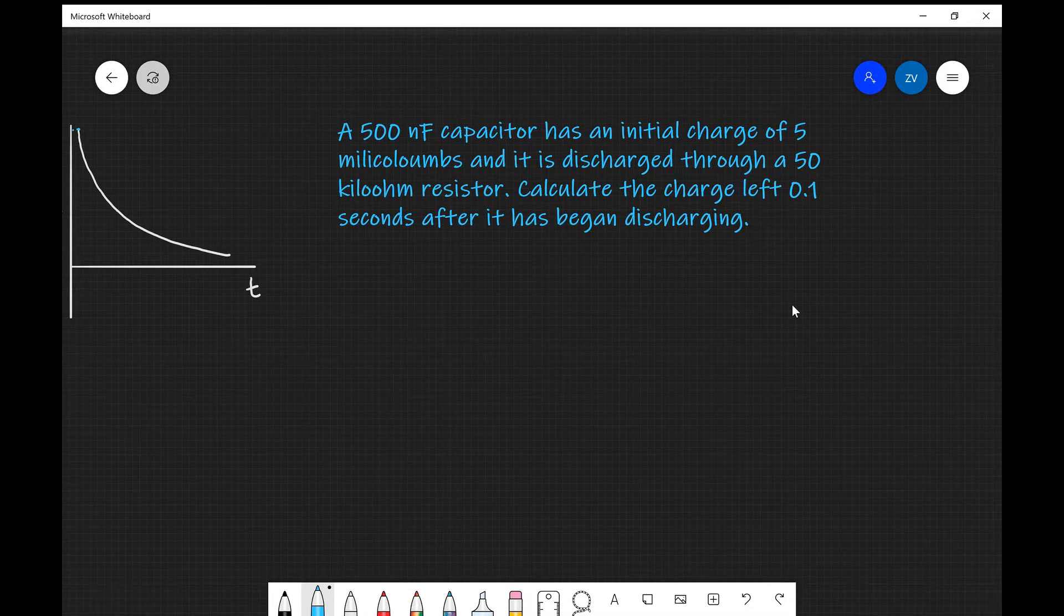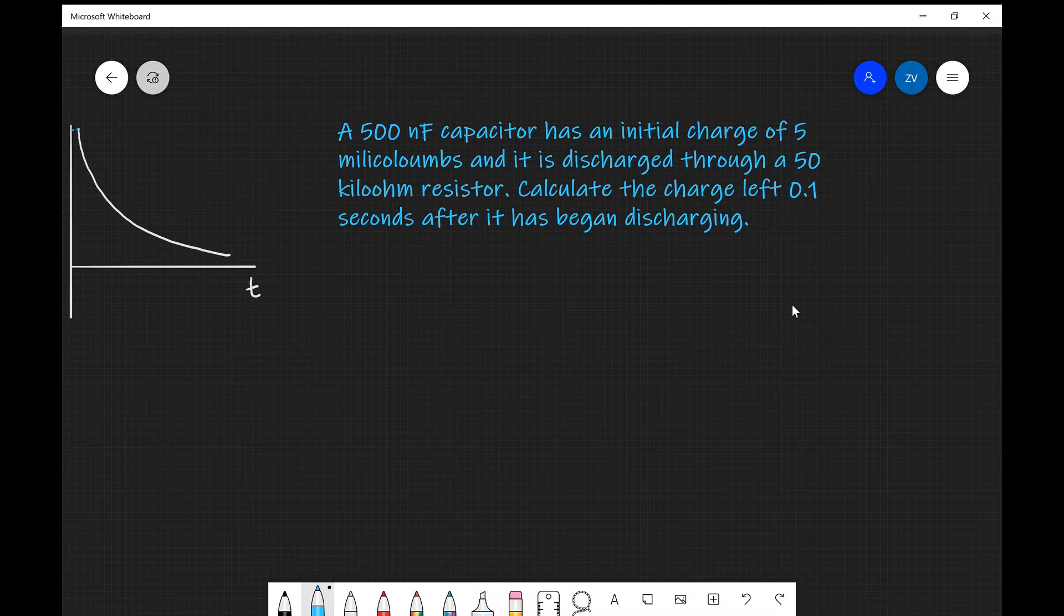Okay, so let's have a look at an example question of applying those equations. We have a 500 nanofarad capacitor which has an initial charge of 5 millicoulombs and it's discharged through a 50 kilohm resistor. Calculate the charge left 0.1 seconds after it has begun discharging.